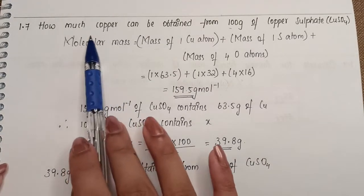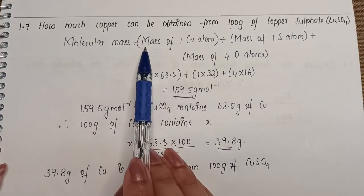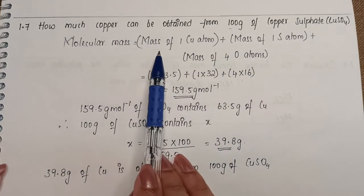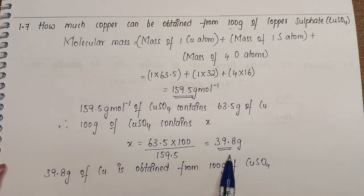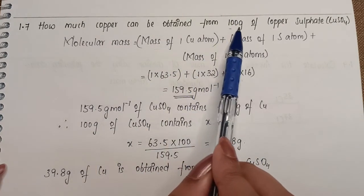This way you can solve the simple problem by first solving the molecular mass, then we compare with the given data and find out how much of copper is required from a given amount of copper sulfate.